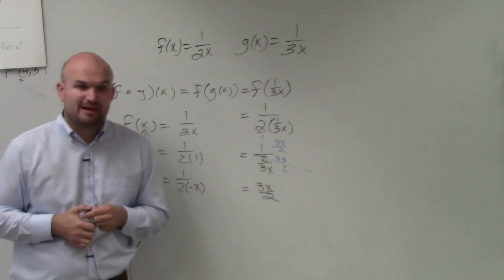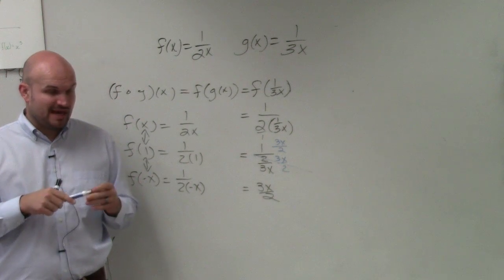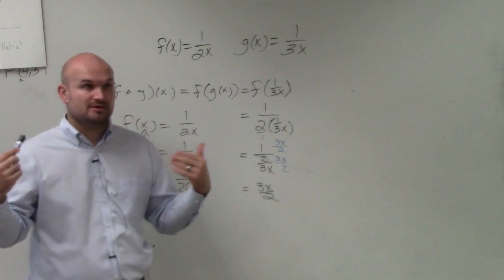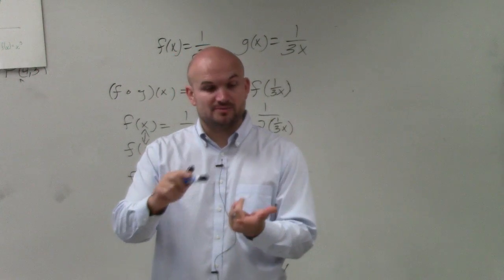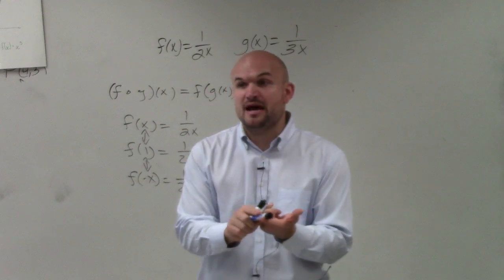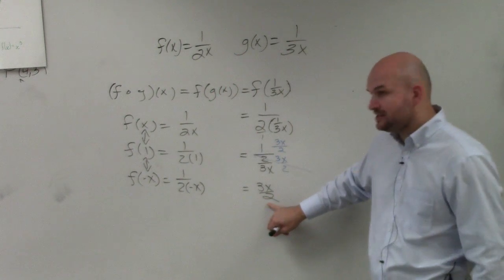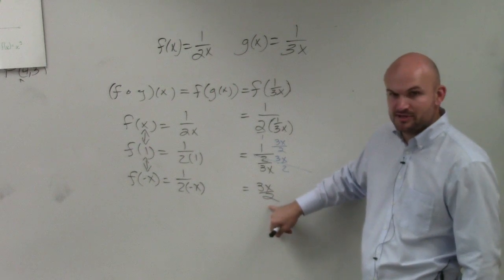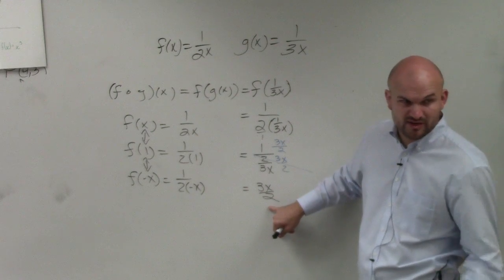Now they say find the domain. So again, our implied domain is all real numbers, unless we have values that make the denominator 0. Is there anything that could make the denominator 0? No, because we have a 2 there.